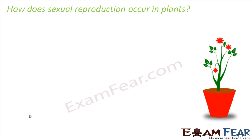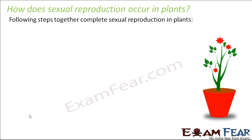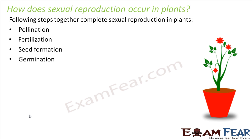We understood how male gamete is formed and how female gamete is formed. But the question is how does sexual reproduction occur in plants? It is not a single step process. A couple of steps are involved: pollination, fertilization, seed formation, and germination. These are the four important steps in the process of sexual reproduction in plants.